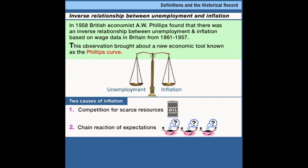So two things cause inflation. Demand for raw materials pushes up costs and causes businesses to increase prices — that's the relationship between the growth of the economy and rising prices. The second thing is expectations: once the economy gets used to inflation, inflation just perpetuates itself. With this in mind, we can draw a relationship between the inflation rate in the economy and the unemployment rate. This relationship is called the Phillips curve.